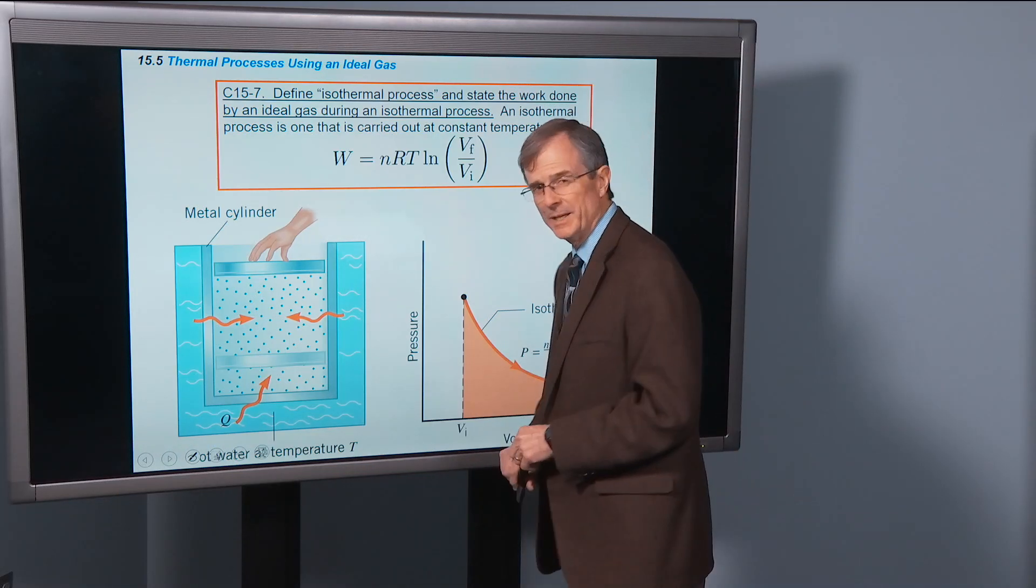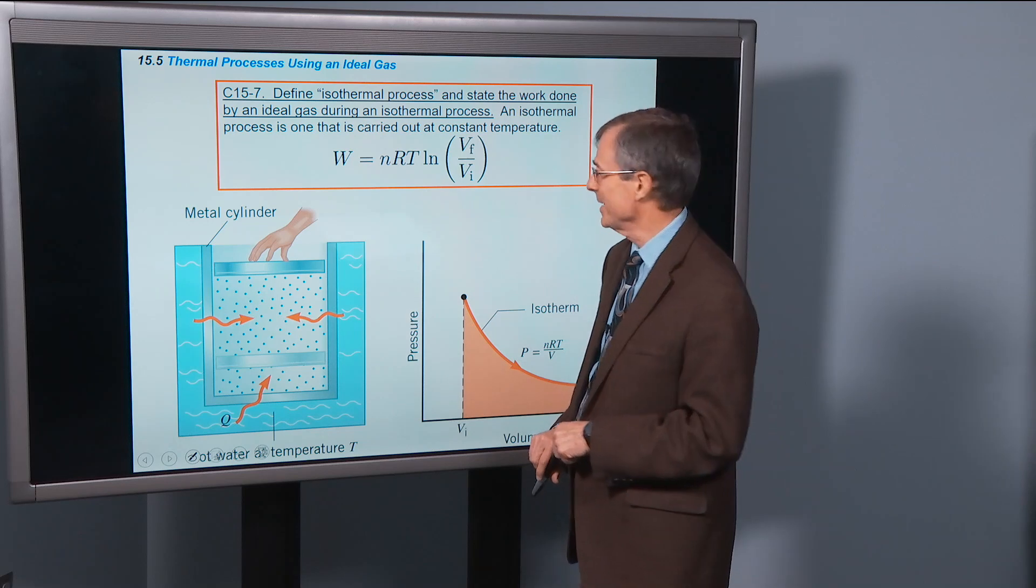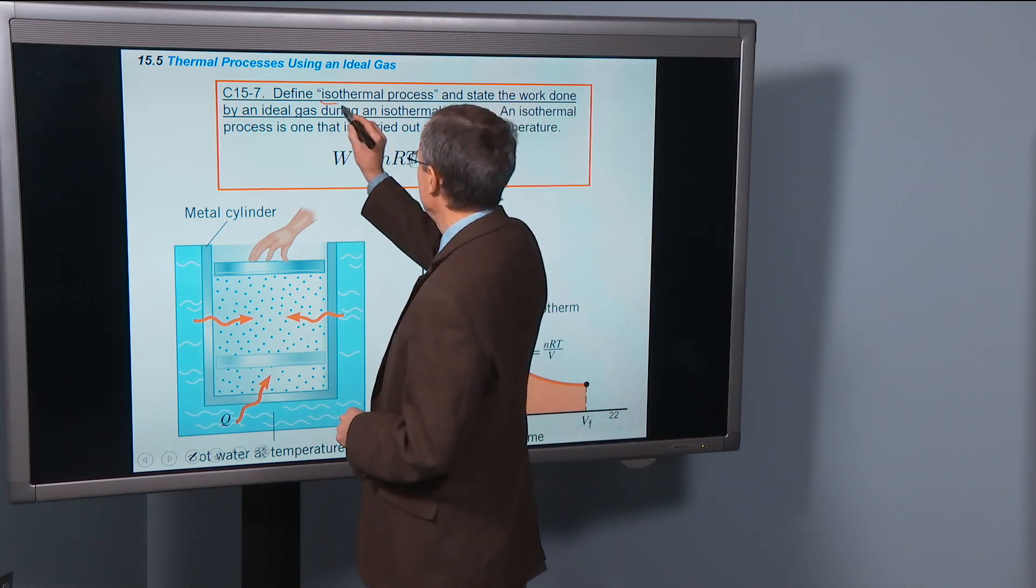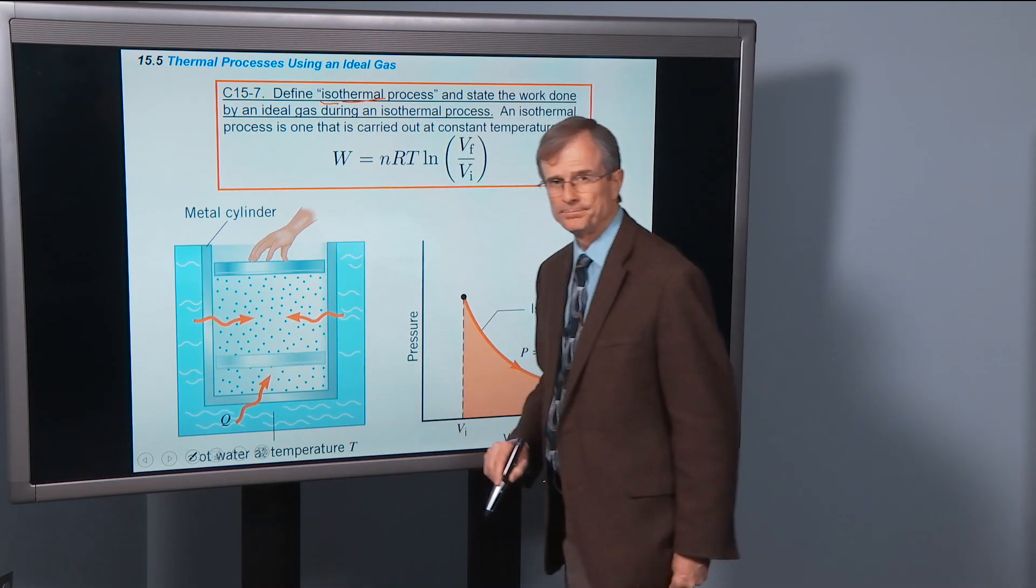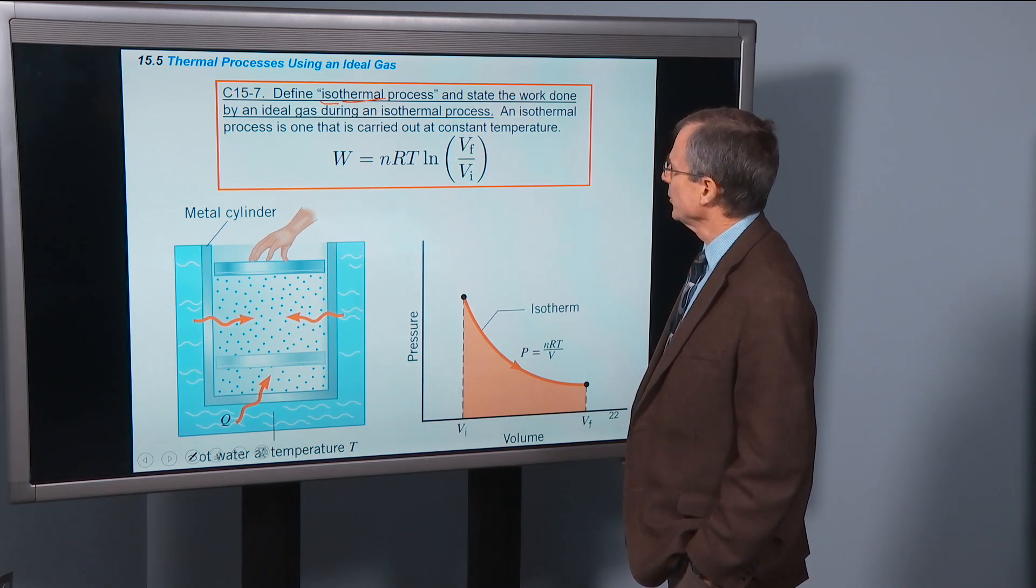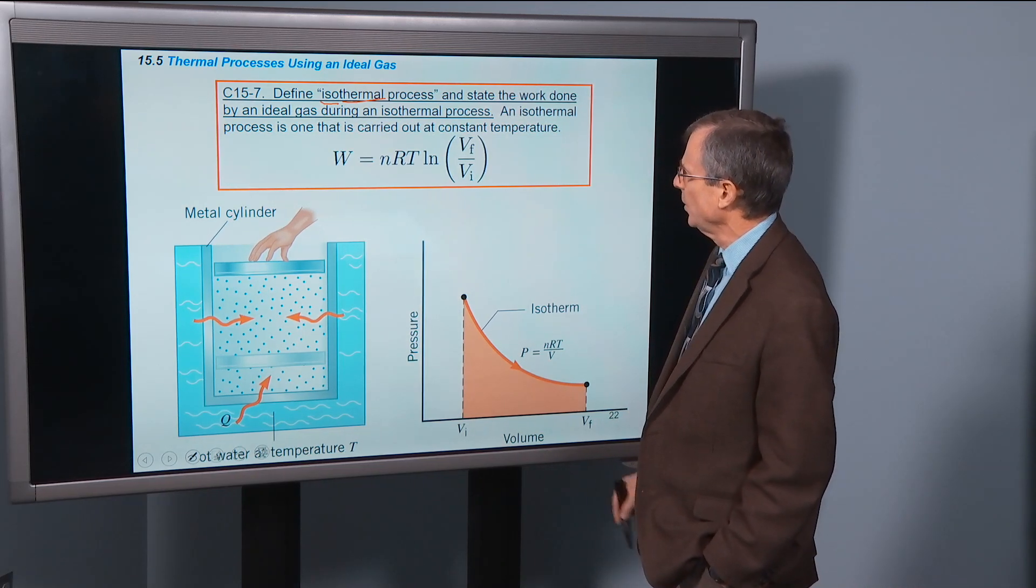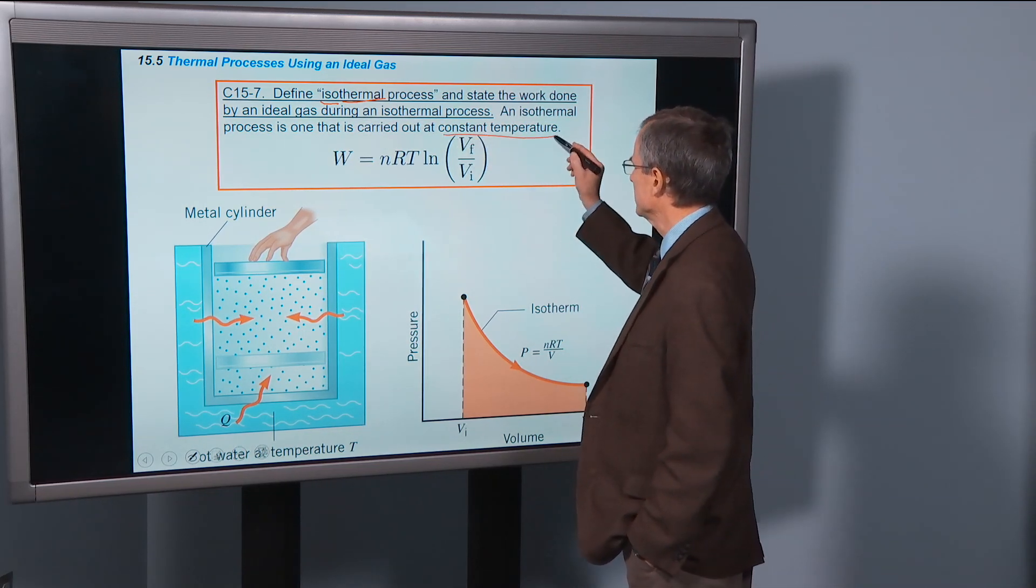What's isothermal? Well, you might be able to guess that one. Iso means same. Thermal means temperature. So an isothermal process is one that is carried out at a constant temperature.